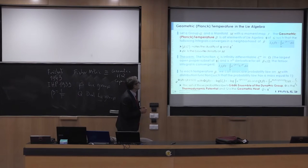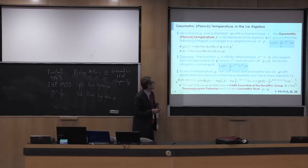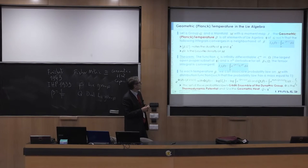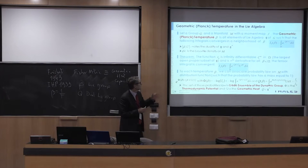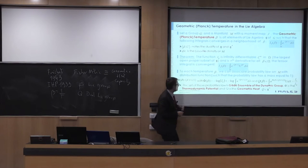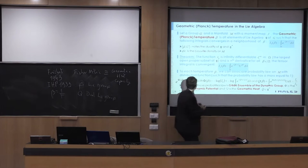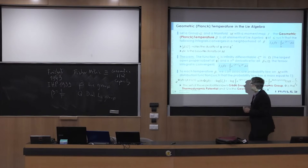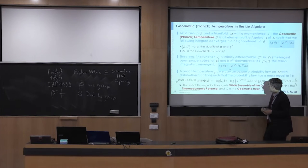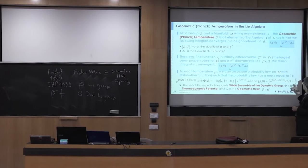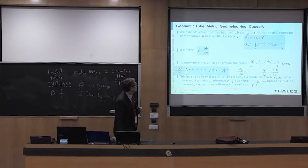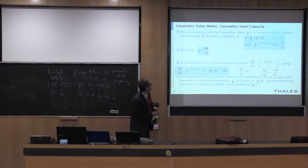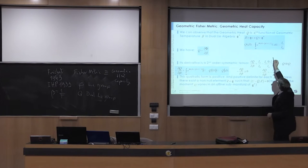We recover the same relations as previously, where the Gibbs density, phi-beta which is minus log of I_0, and q-beta which is the ratio between E_1 and E_0. So q-beta is in fact the mean momentum map. You have this relation between q and phi, so q is defined by the derivative of phi with respect to beta. What is also interesting is this second-order symmetric tensor, which is the derivative of q with respect to beta. As q is the derivative of phi with respect to beta, we have a second derivative of phi, and we recover the Fisher metric.